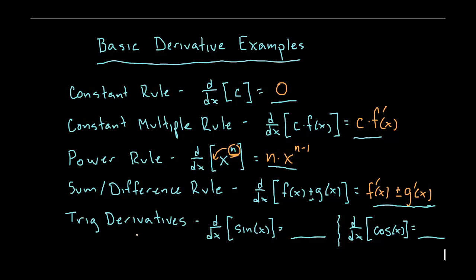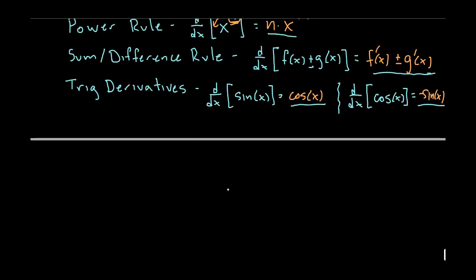A few trig derivatives. There are others but we are not going to file these under the basic derivative rules, but just the derivatives of sine and cosine only. The derivative for sine was cosine x and the derivative for cosine x was negative sine x. So negative sine x for the derivative of cosine and cosine x for the derivative of sine. So those are what we call our basic rules.